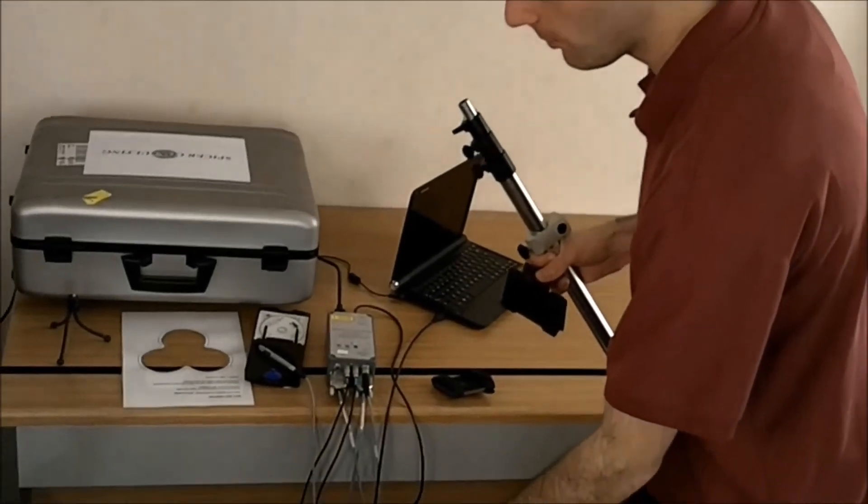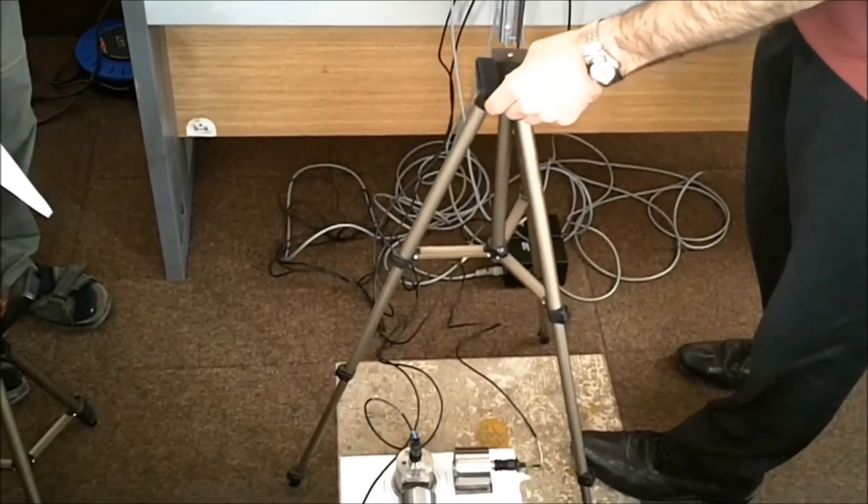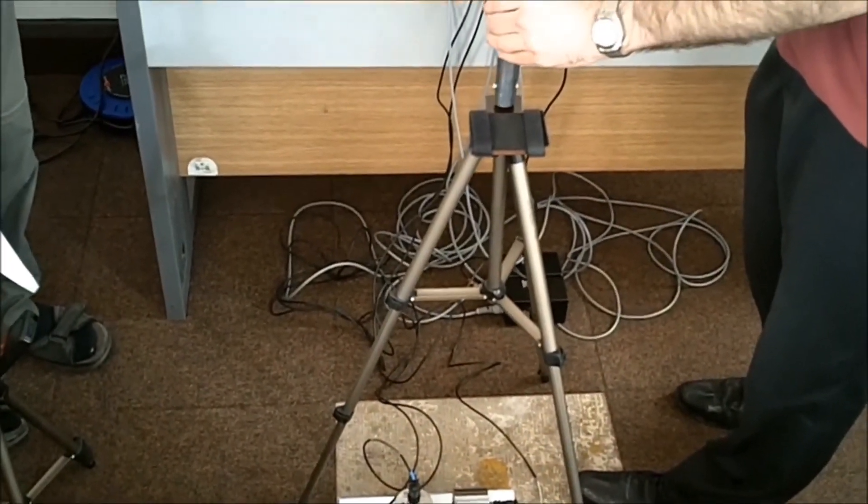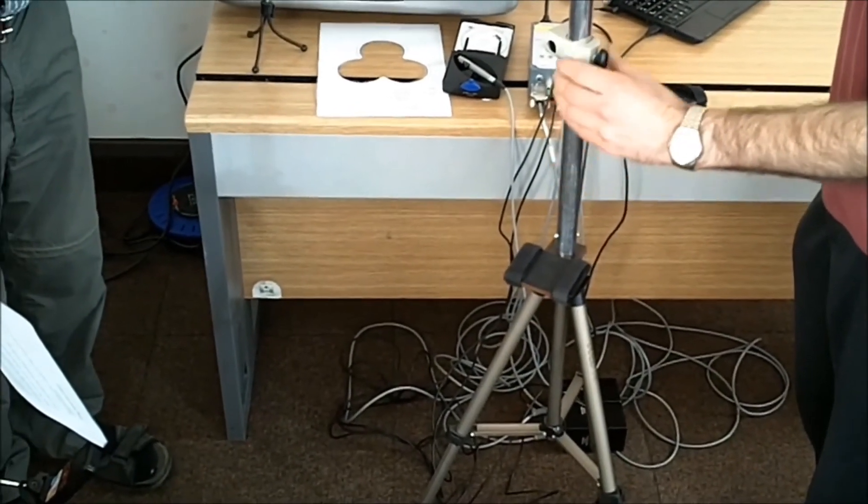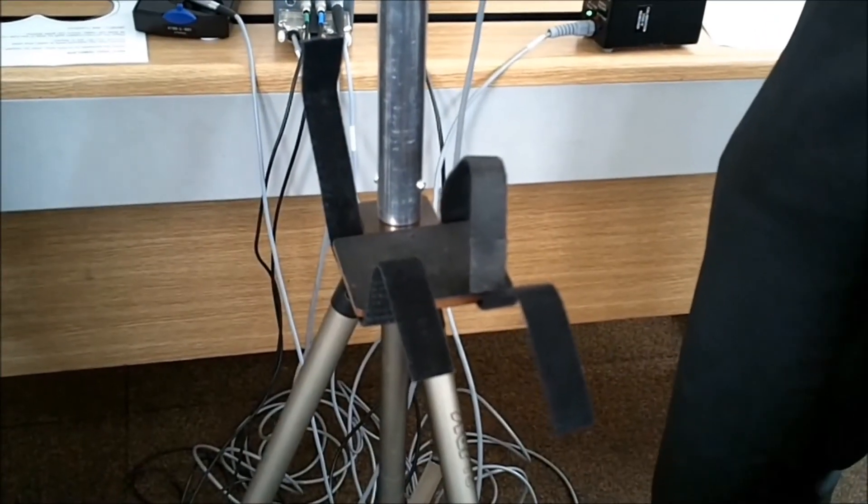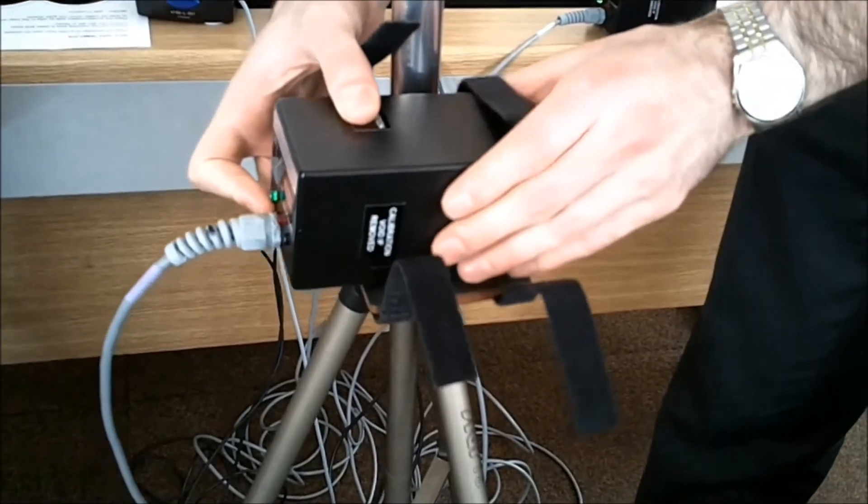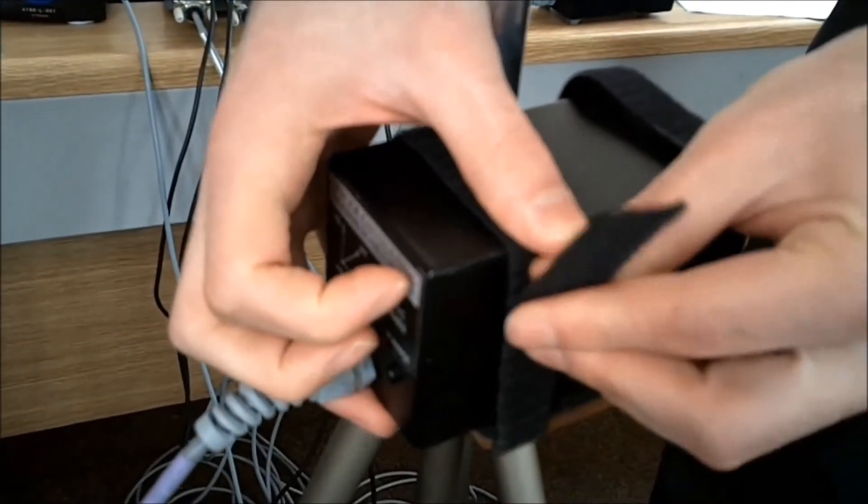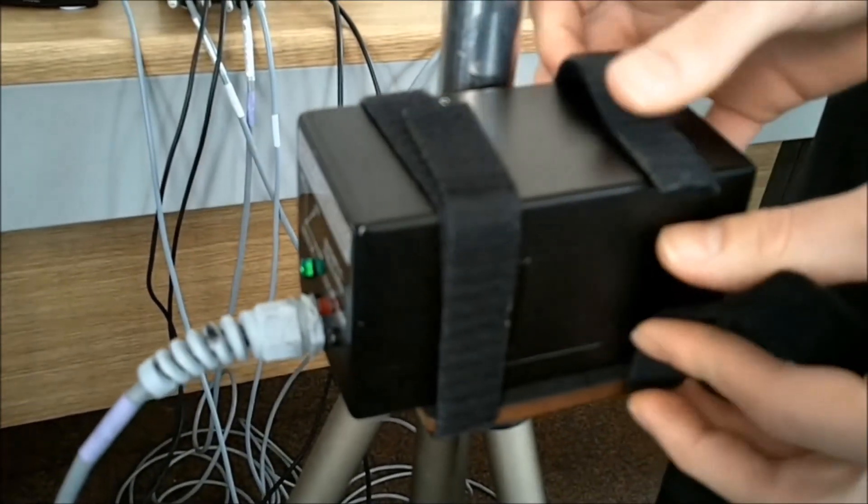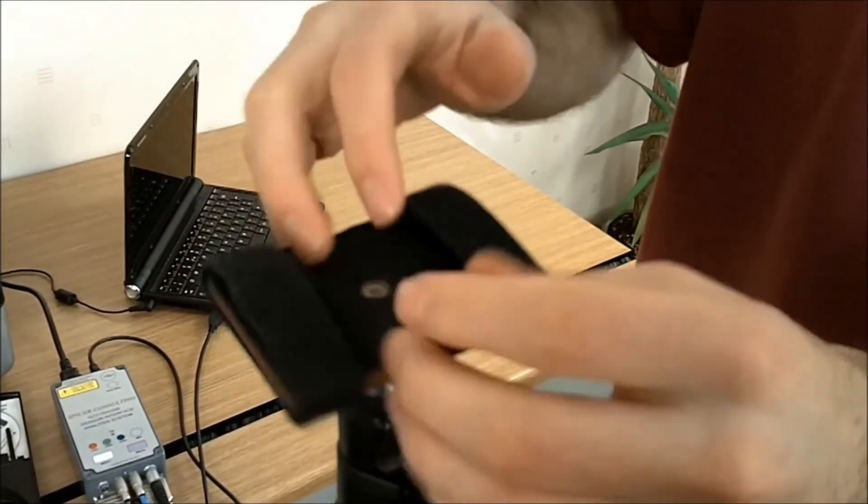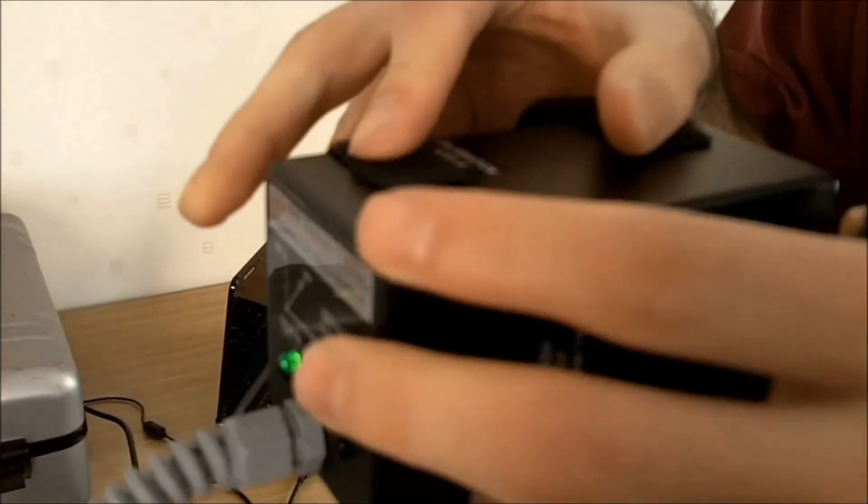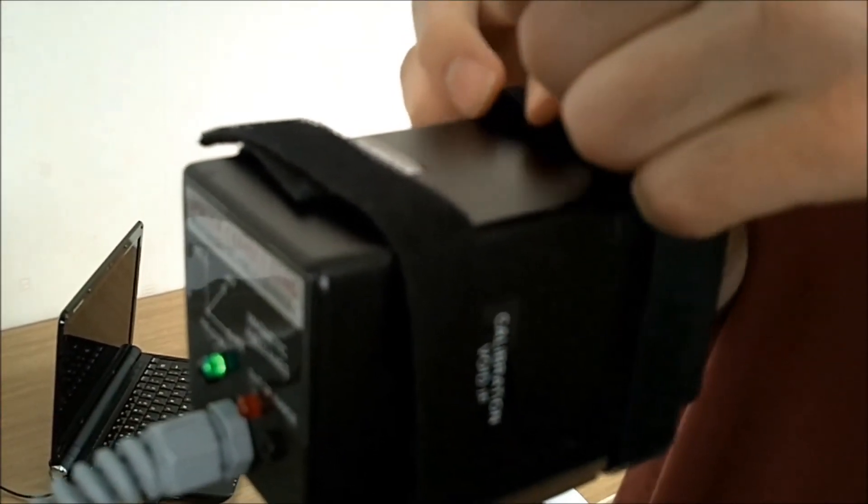Then erect the tripod with its support for the two DC sensors. Make sure the DC sensors are at the right height. Also make sure that the DC sensors are facing in the Y-axis direction, aligning yourself with the Y-axis direction on the accelerometer template.